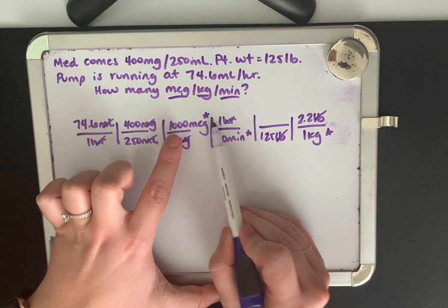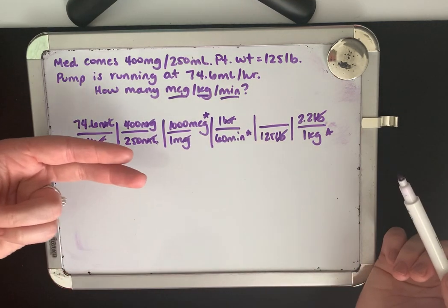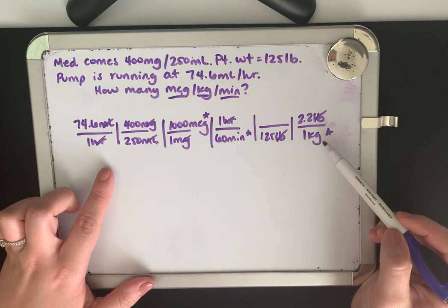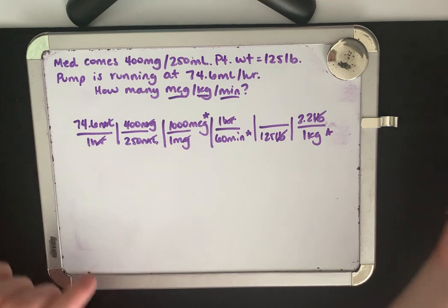So our micrograms per every kilo per every minute. You'll notice this is reversed. In the last problem, we had our kilos on top. When we work in reverse, it's on the bottom. So just be aware of that.